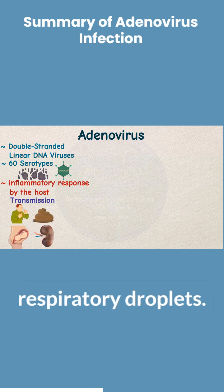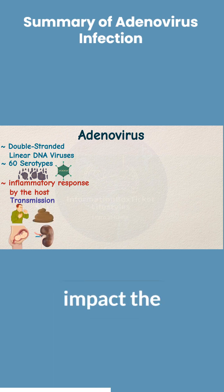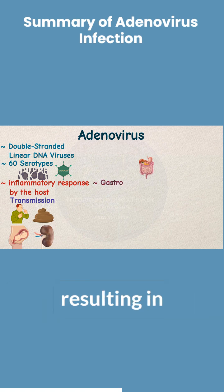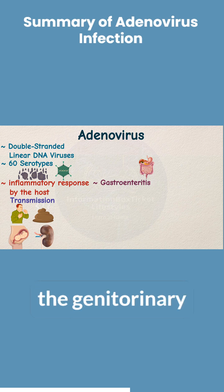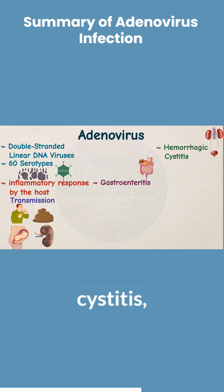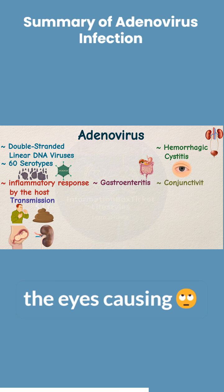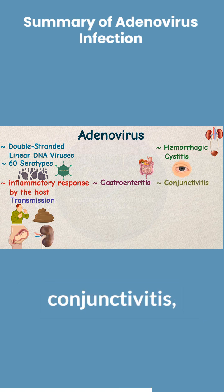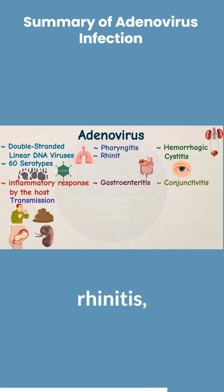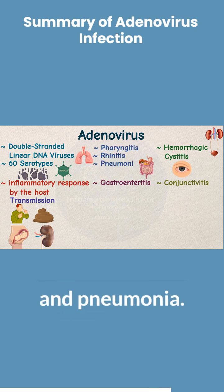And respiratory droplets. It can impact the gastrointestinal tract, resulting in gastroenteritis; the genitourinary system, creating hemorrhagic cystitis; the eyes, causing conjunctivitis; and the respiratory system, causing pharyngitis, rhinitis, and pneumonia.